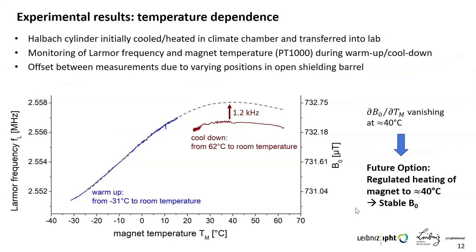The last result is the temperature dependence of this magnetometer system. The Halbach cylinder was heated or cooled in a climate chamber, then transferred back to the lab within a few minutes, and we monitored the Larmor frequency and magnet temperature during warm-up or cool-down. Around 40 degrees Celsius, the curve exhibits a flat top — a point of vanishing temperature dependence. By applying regulated heating to this point, the bias field should remain stable over days.